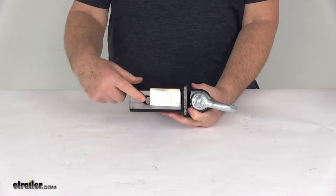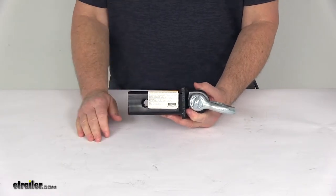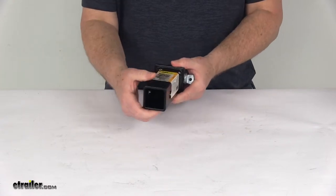It does require a hitch pin and clip or a hitch lock to install this into your hitch receiver. Those items we do sell separately on our website. Again the application for this is 2-inch by 2-inch trailer hitch receivers.